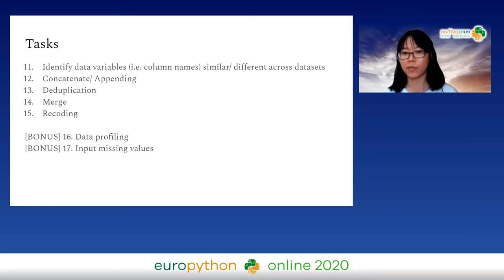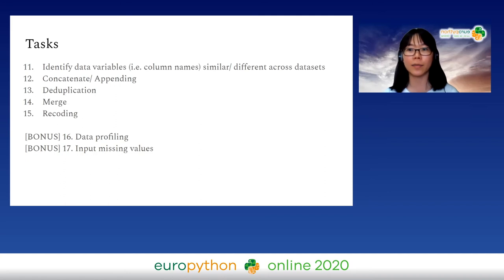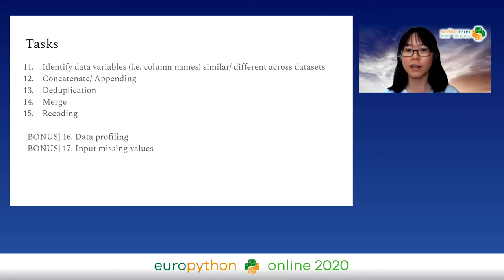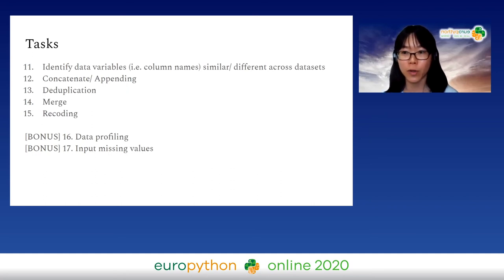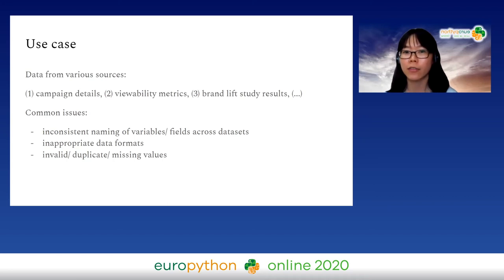The last tip before the two bonus tips is about recoding — where we want to include a new variable based on existing variables by doing some form of recoding. Pandas allows us to do this very easily. There are also two additional tasks I do sometimes — not super often, but very interesting and useful — so I've included them as bonus tips.